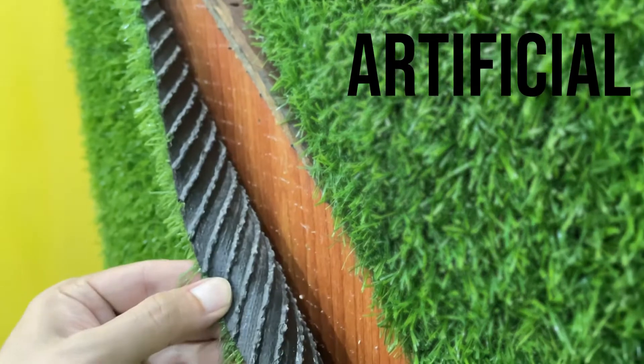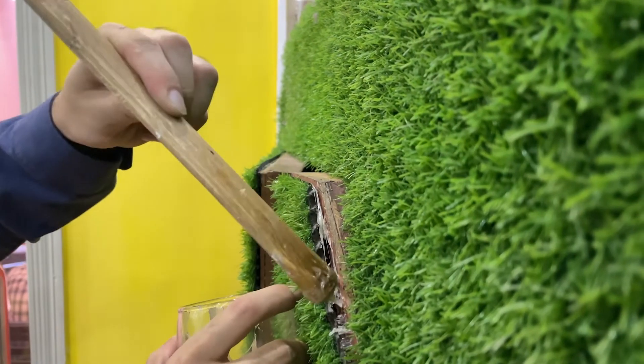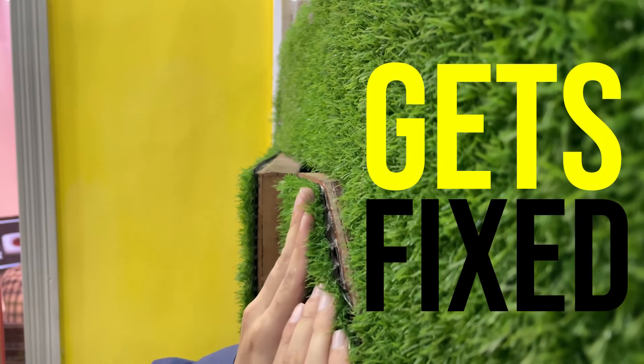To fix artificial grass on the door, apply magic glue on the surface of the door. Attach the astroturf on the door. The astroturf gets fixed.